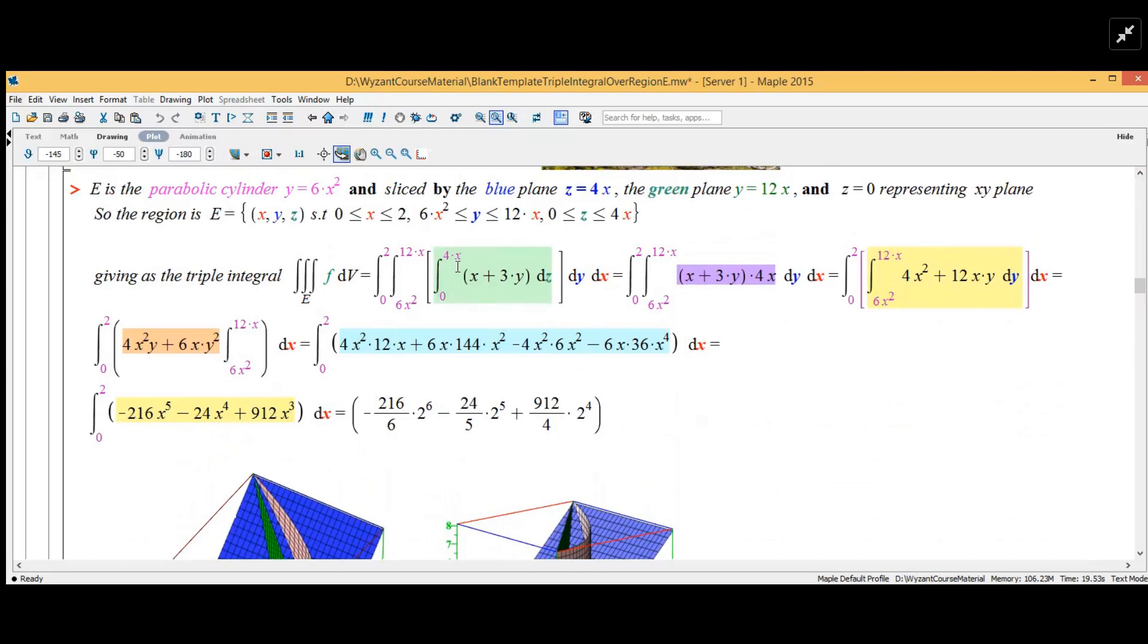I did the grunt work here. We first integrate with respect to z going from zero to 4x, and since there's no z in here it's just 4x.